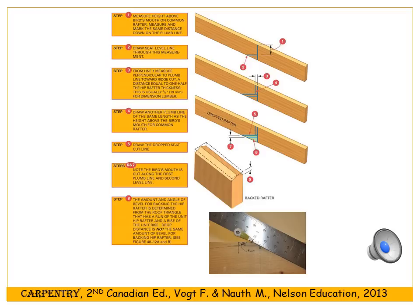The hip rafter runs at a 45 degree angle, so we have two choices. One: drop the hip rafter just a little so either edge is in the same plane as the flat tops of the common rafters. Two: plane and bevel the top of the hip rafter to achieve the same plane. Either way, it's called dropping or backing the rafter, and the amounts can be found from the framing square or using triangles.